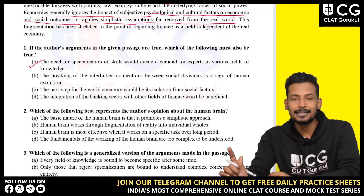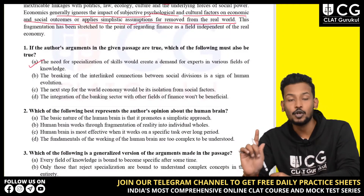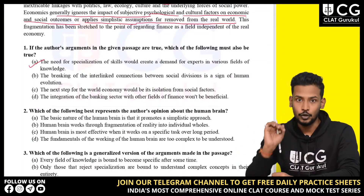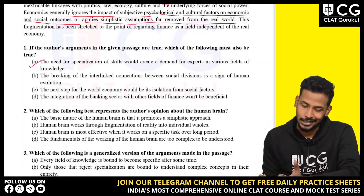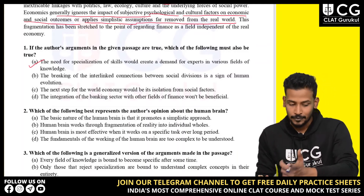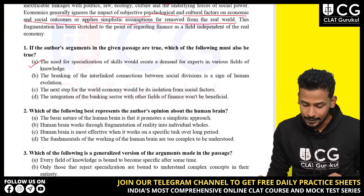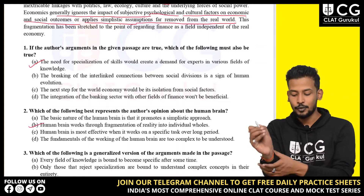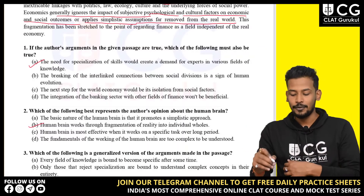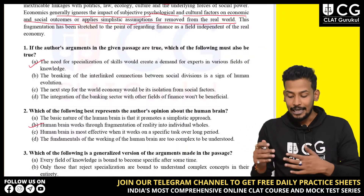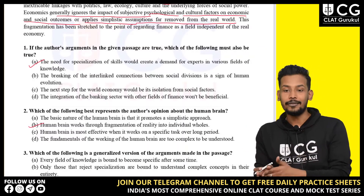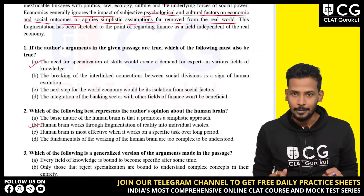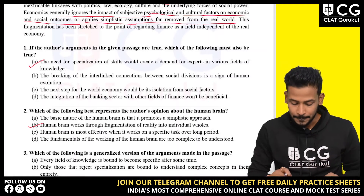Moving on to the next question: which of the following best represents the author's opinion about the human brain? Very easy question. The right answer is B: the human brain works through fragmentation of reality into individual wholes — this is exactly what was discussed in the passage.